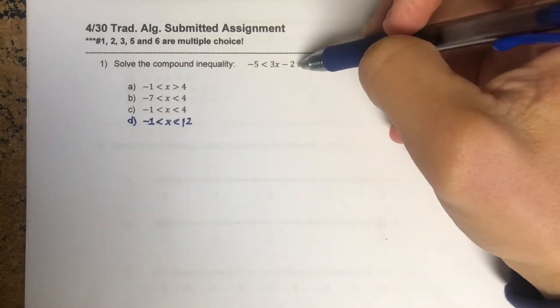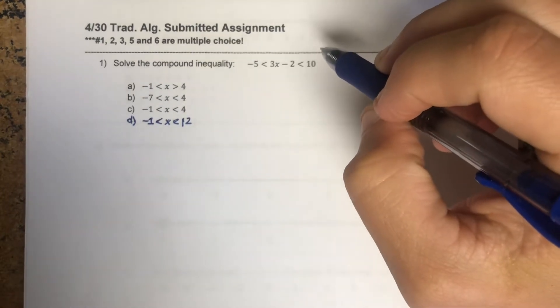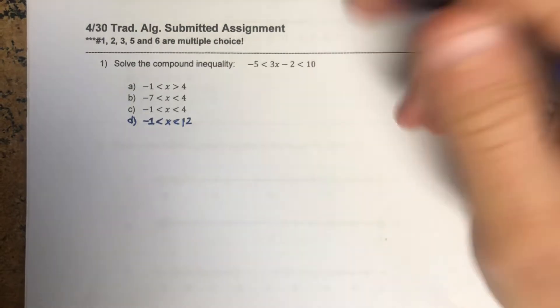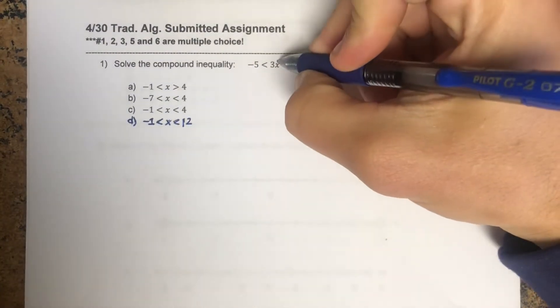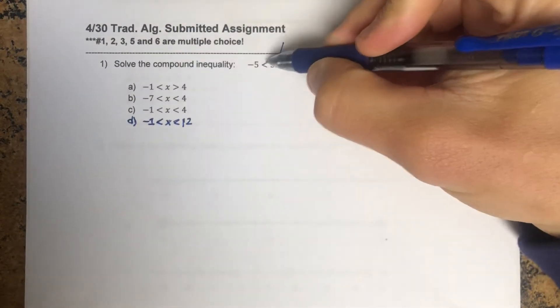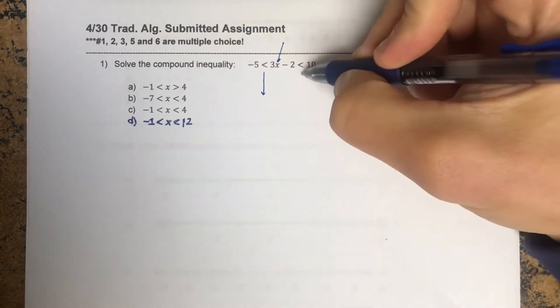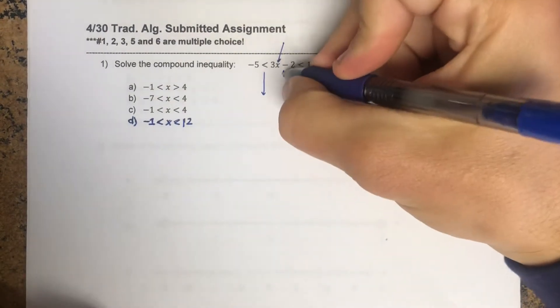So this is a classic compound inequality. We had tried to clear this up from last week, two weeks ago now from when you're listening to this video. You recognize the variable in the middle, you got your two inequality signs. You're going to keep those inequality signs all the way. Whatever you do to the middle happens to both sides.